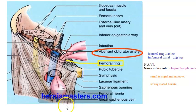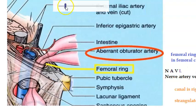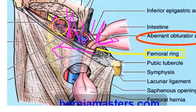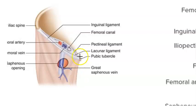In the femoral canal you have a vein, an artery, and a nerve. There is also a lymph node called the lymph node of Cloquet. So you have: lymph node, vein, artery, and nerve.